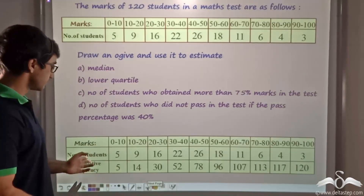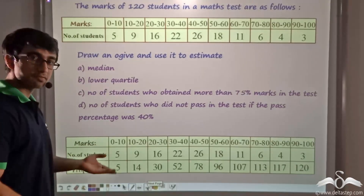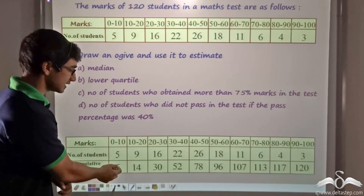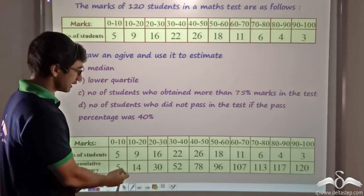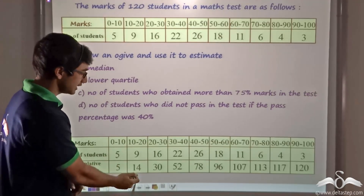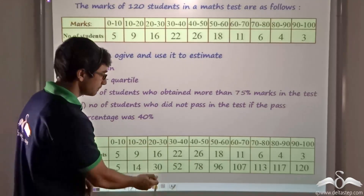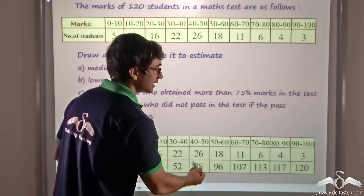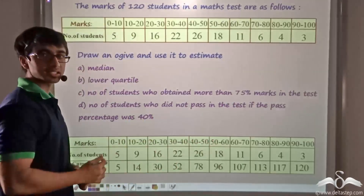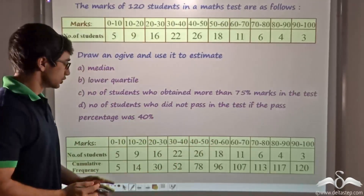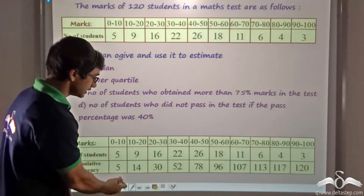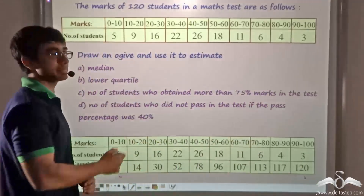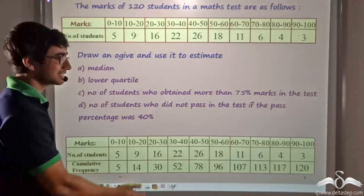From the frequency we find the cumulative frequency. For the first class it is 5, then 5 plus 9 is 14, 14 plus 16 is 30, 30 plus 20 is 52, 52 plus 26 is 78, and so on till the last class. The total number of students, as mentioned, is 120.